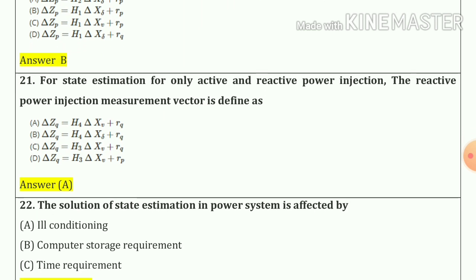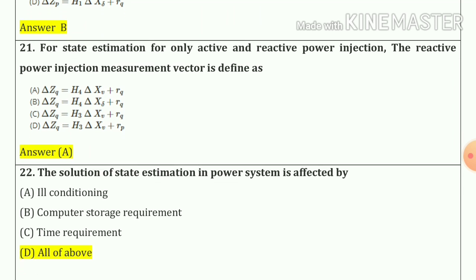Question number 21: For state estimation with only active and reactive power injection, the reactive power injection measurement vector is defined as option number a — our correct answer.